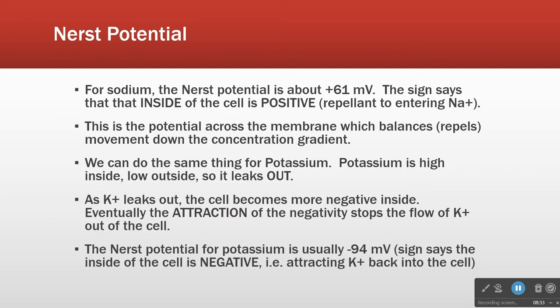In physiology, every time you see a number like that, it's going to be a little different depending on the source. So I'm not going to ask you to know specific numbers — ranges, yes. The Nernst potential for sodium is positive and it's between 60 and 90. For our purposes today, we'll say plus 61.